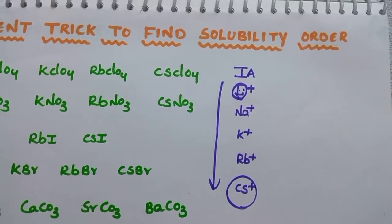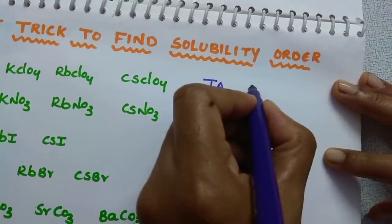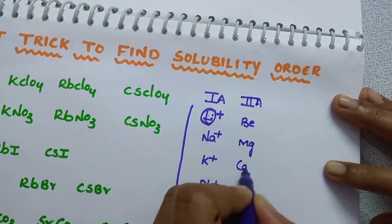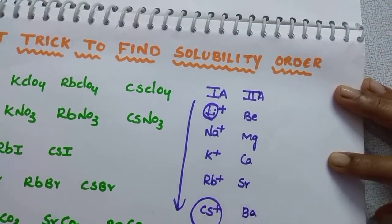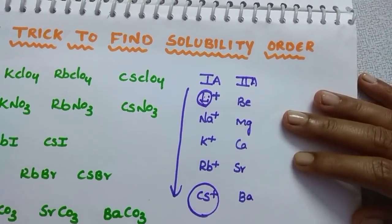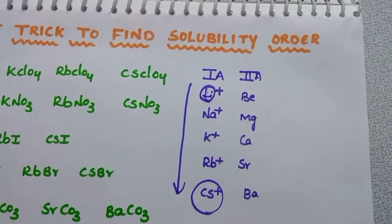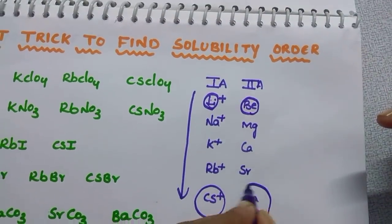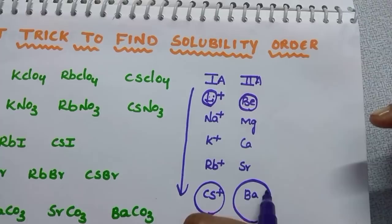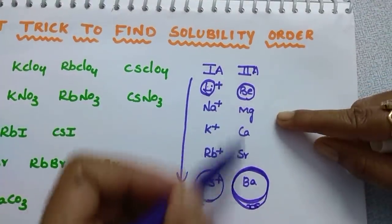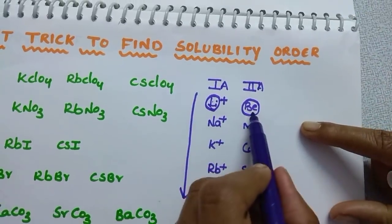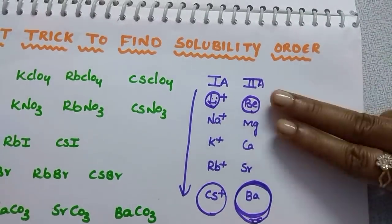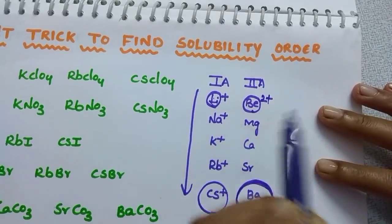Among Group 1A ions, the largest ion is Cs⁺ and the smallest is Li⁺. For Group 2A elements — beryllium, magnesium, calcium, strontium, barium — from top to bottom, beryllium has the smaller size and barium has the larger size. Group 2A elements have two electrons in the valence shell, so they exhibit a +2 oxidation state.